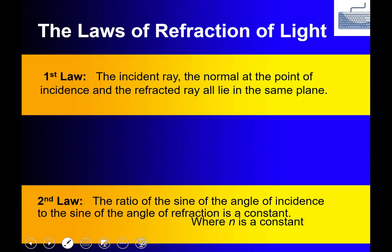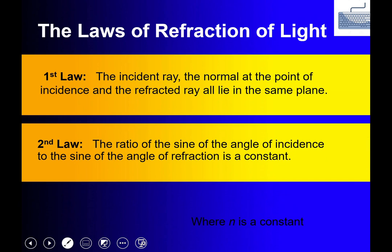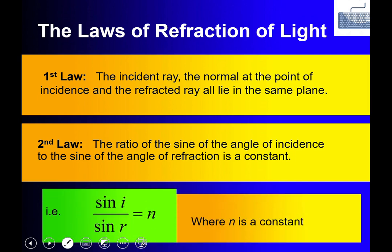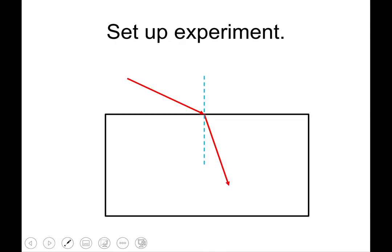There are two laws of refraction. The first law states that the incident ray, the normal at the point of incidence, and the refracted ray all lie in the one plane. The second law — Snell's law — states that the ratio of the sine of the angle of incidence to the sine of the angle of refraction is a constant, n. This means sine i over sine r always gives you a constant number n.